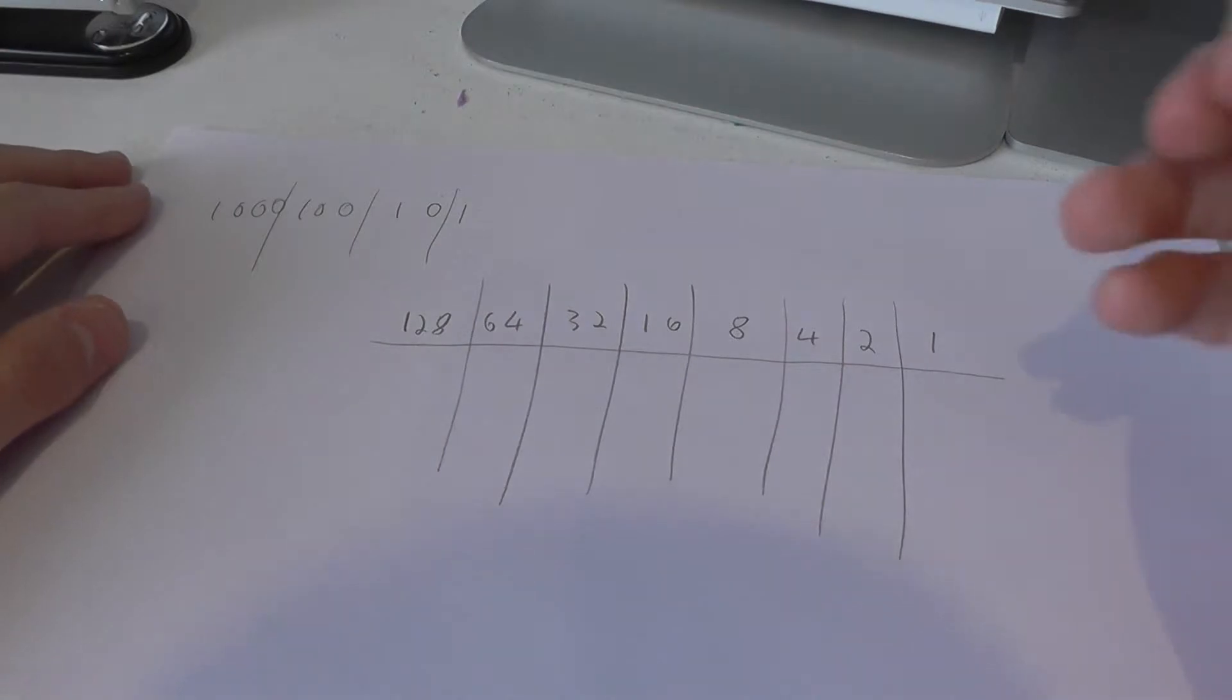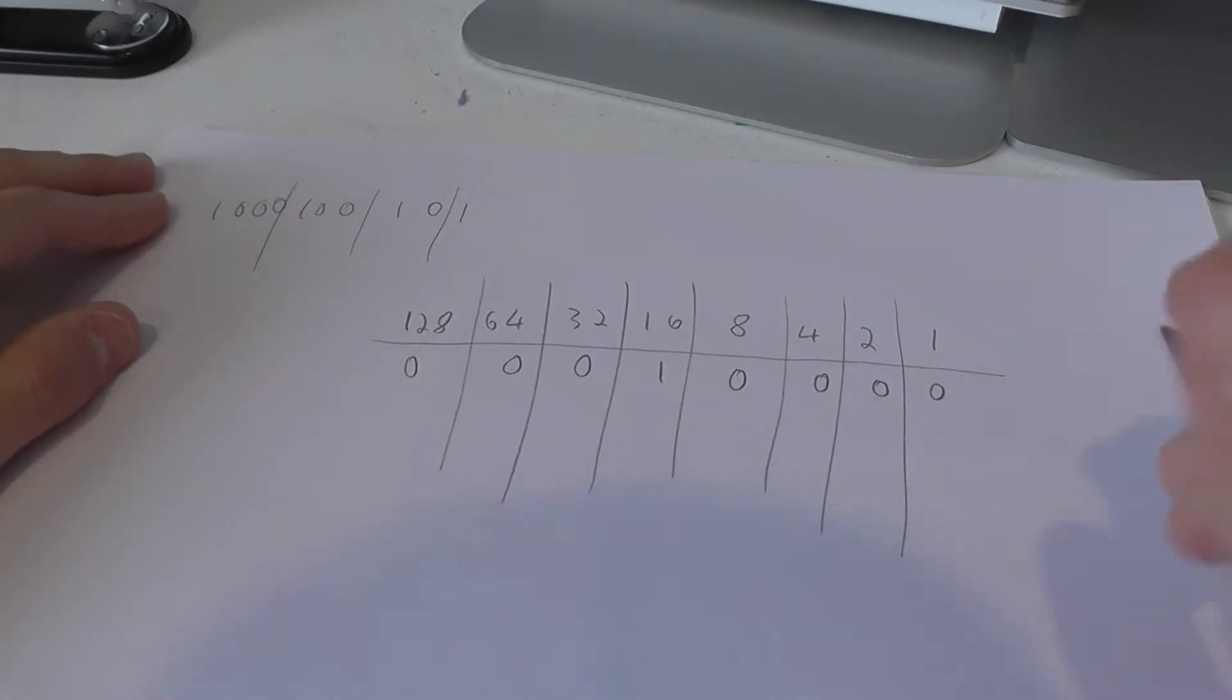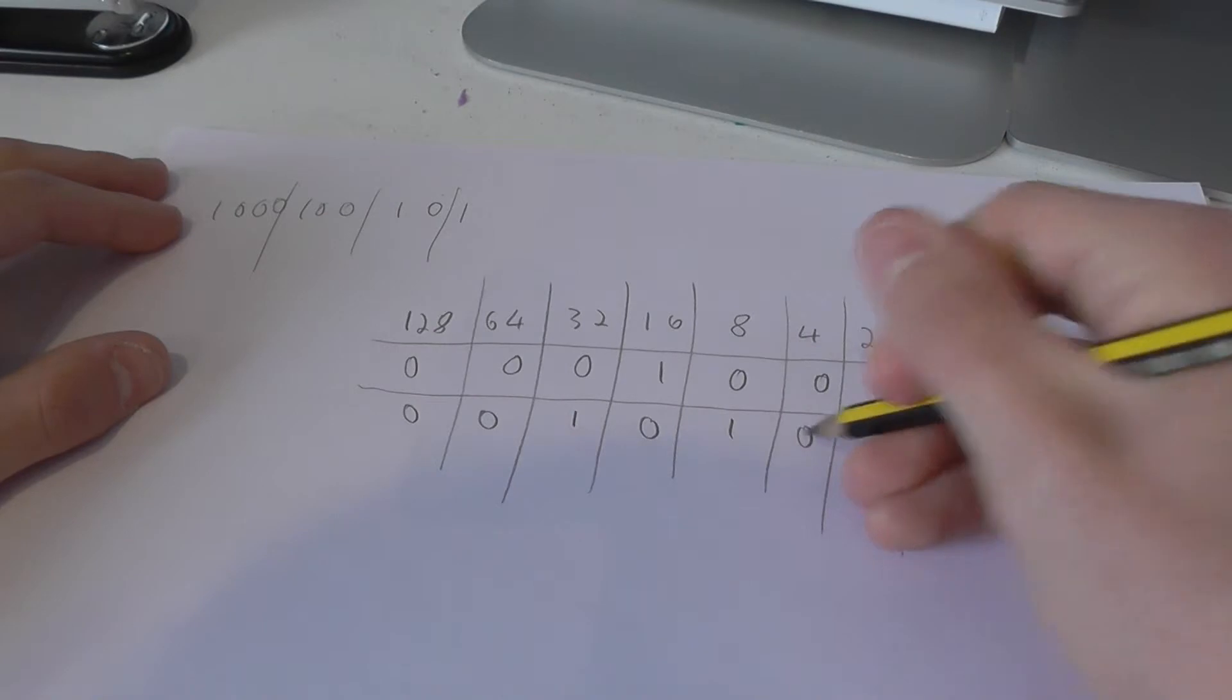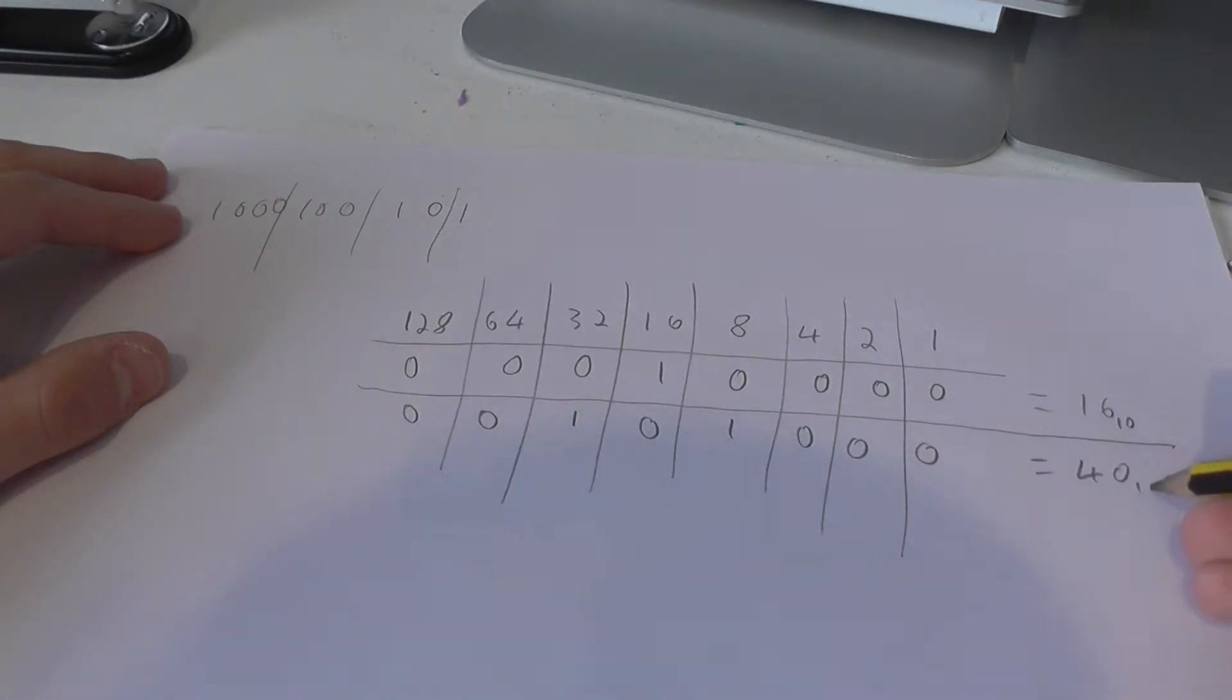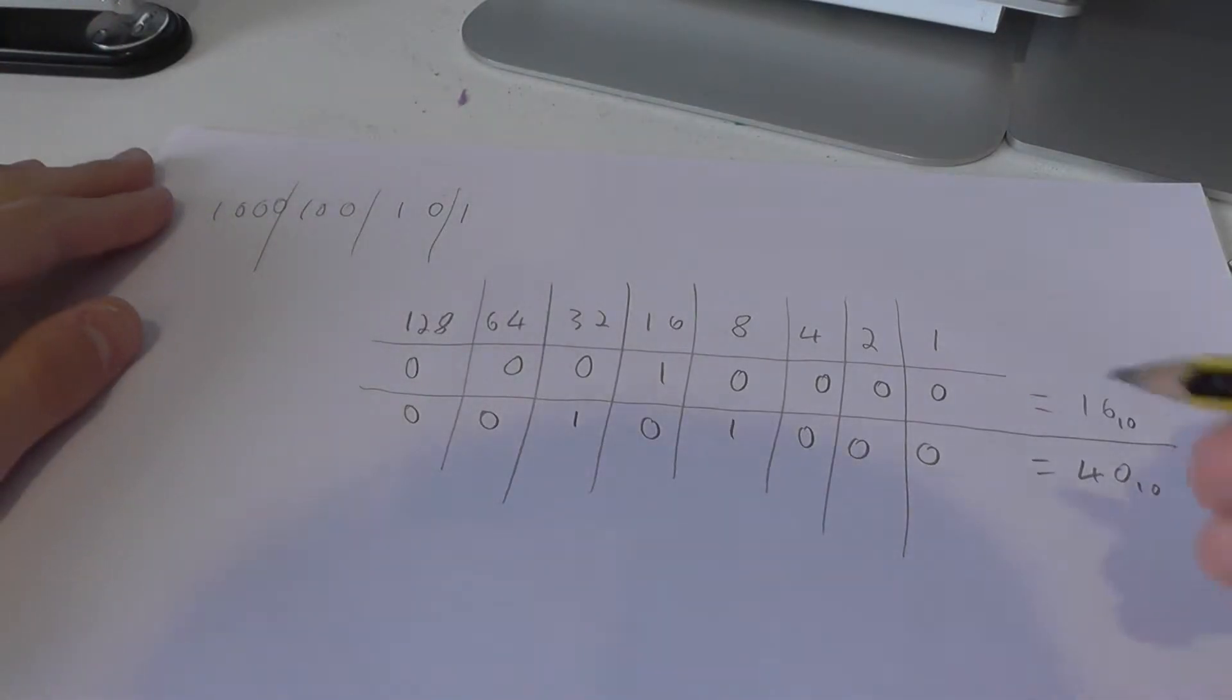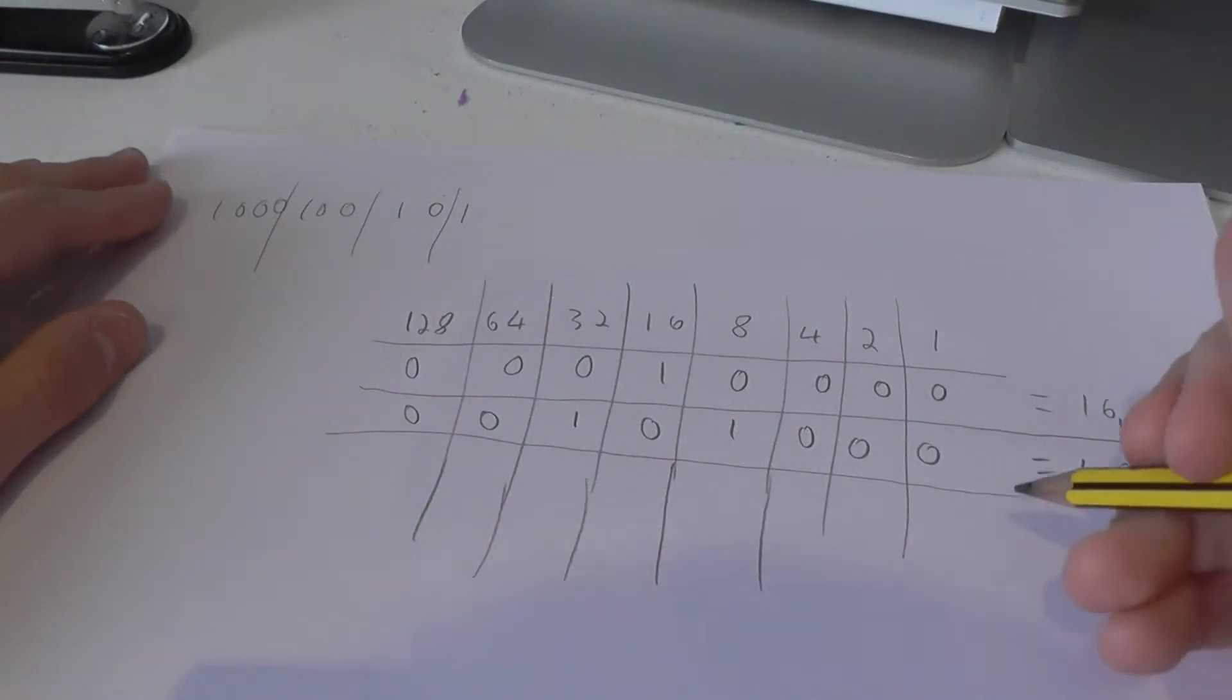To explain how this works, if I wanted to represent the number 16 in binary, it would be 10000. That is 1 times 16, so that equals 16 in base 10. If I wanted to represent the number 40, 40 would be 32 add 8, which is 101000. That equals 40. This string of 8 ones and zeros represents a byte of data in computing.